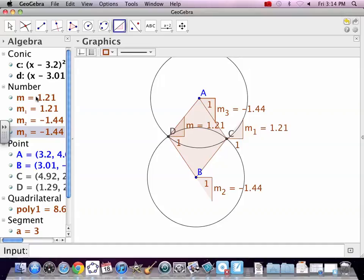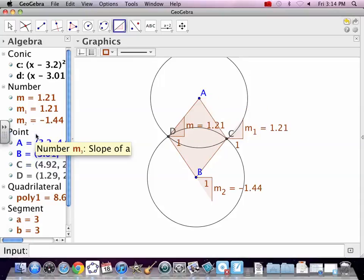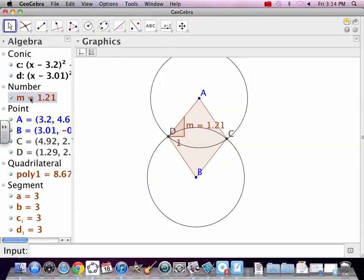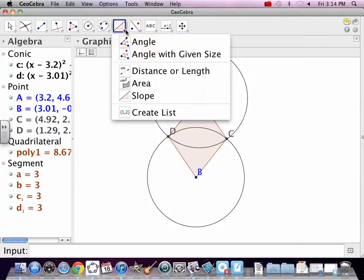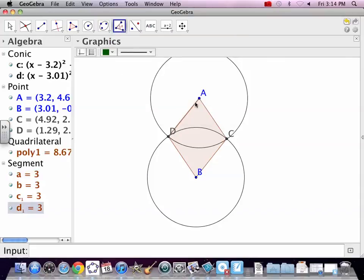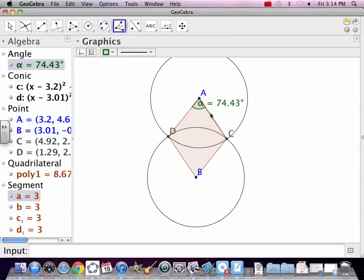So, parallel. Two sets of parallel. Let's get rid of some of this stuff. It doesn't want to cooperate sometimes. Boom, boom, boom. The angles are supposed to be the same, right? The opposite angles are supposed to be the same.